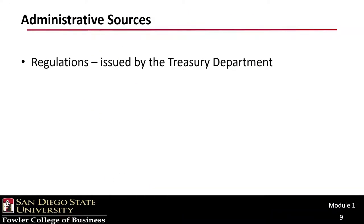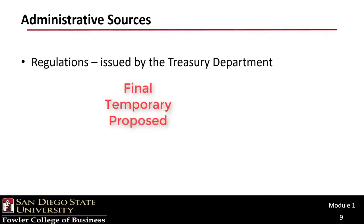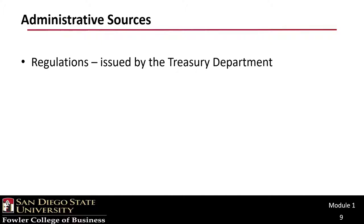The most significant source of administrative tax laws are the Treasury regulations. These are the IRS's interpretations of what the Internal Revenue Code says, because Congress is not always crystal clear on the meaning of certain items in the code. Regulations come in three forms: final, temporary, and proposed. Final have the highest authority, but so do temporary. Proposed regulations are actually the lowest until they are accepted as final.